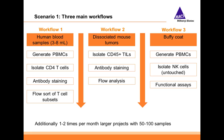For our first customer scenario, we have a busy lab with three main workflows: one with human blood samples of 3 to 8 milliliters, one with dissociated mouse tumors, and one with buffy coat. The blood and buffy coat workflows contain a sample preparation step to generate PBMCs, after which each workflow has a cell separation step. After separation, the CD4 T cells from workflow 1 and the CD45 T cells from workflow 2 are stained with antibodies and used for flow sort or flow analysis. The NK cells from workflow 3 are used for functional assays. Additionally, one or two times a month they have larger projects of 50 to 100 samples.